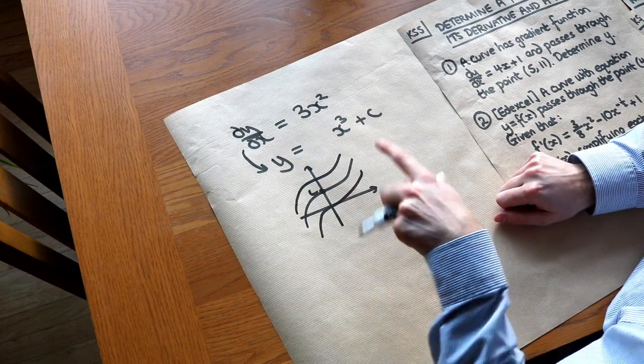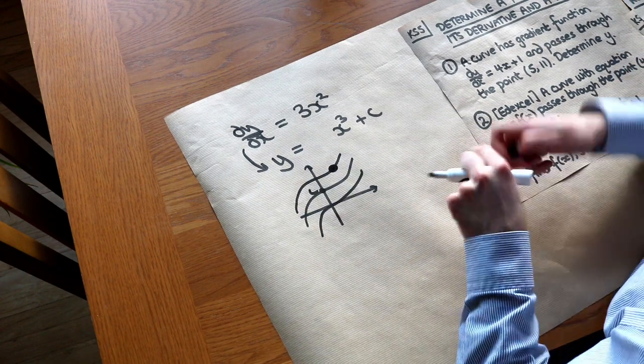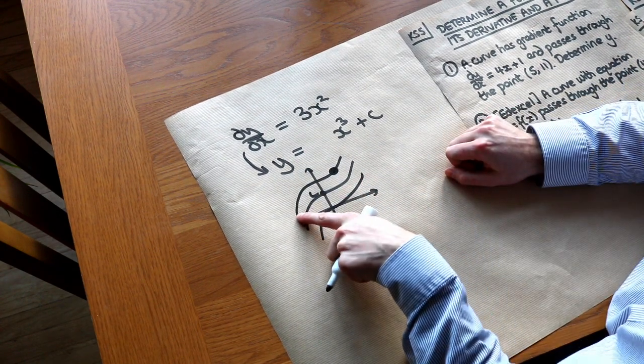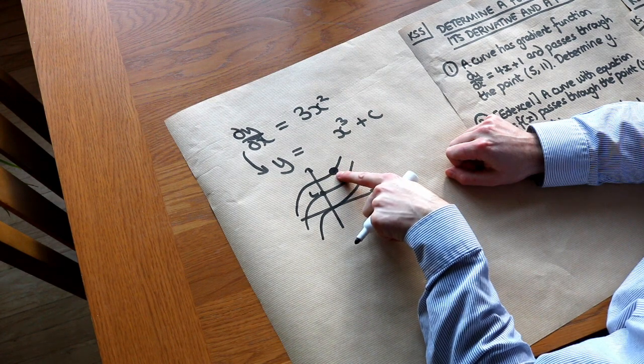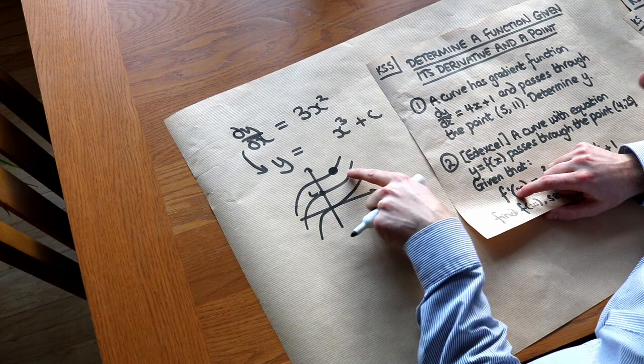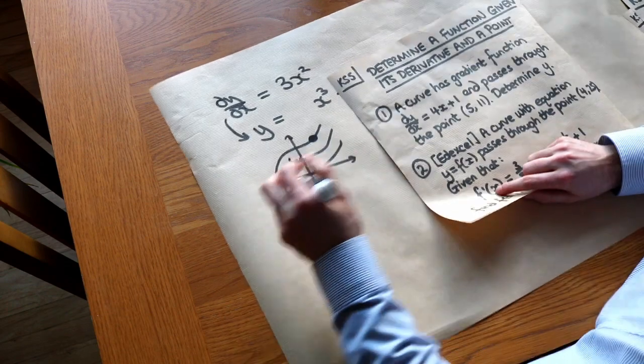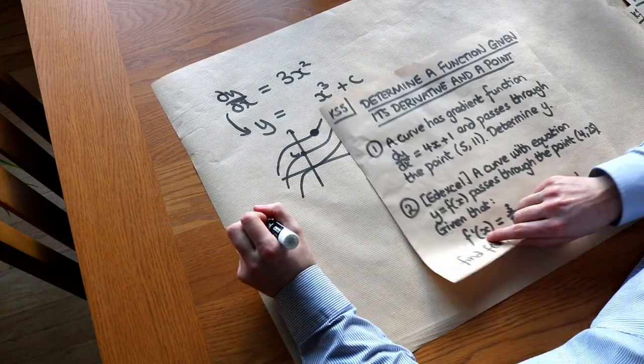But if I was to fix a point on here, so let's just say I knew that this was a point on the curve, then it couldn't have been these other curves. It could have only been this curve which goes through that particular point. So basically, the only principle in this video is that if you have a point on the curve, you could then subsequently work out what this plus c is.